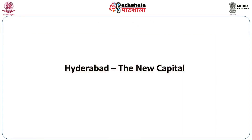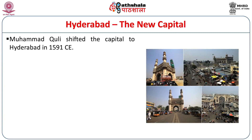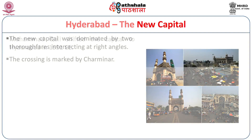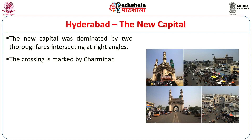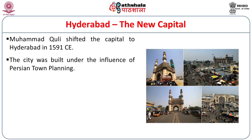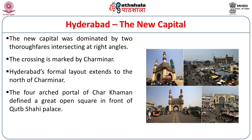Muhammad Quli shifted the capital to Hyderabad in 1591 CE, and the first project was to build the Charminar. Charminar is located at the crossing of two major thoroughfares, and the city was built under the influence of Persian town planning. This layout extends to the north of Charminar. The four arched portals of Char Ghaman defined a great open square in front of the Qutub Shahi palace.